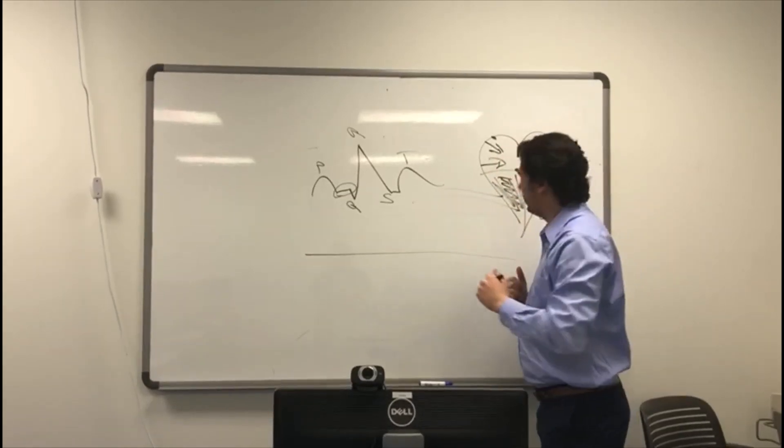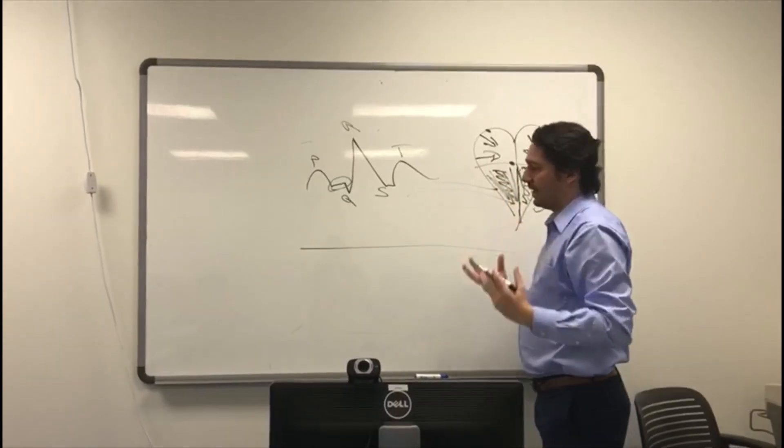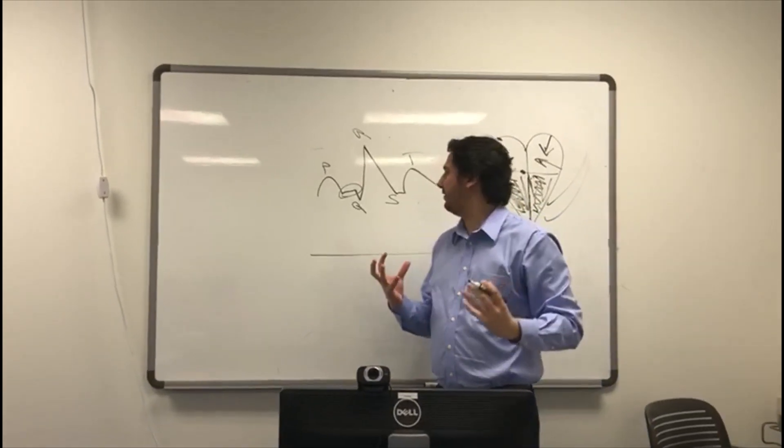the AV node releases that electricity. And it goes down the bundle of His, or the His bundle, which is going to be at the center of the heart, into the Purkinje fibers to let the ventricles relax.